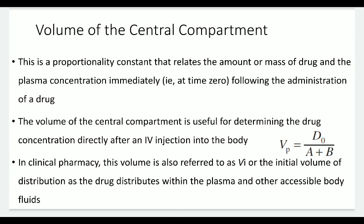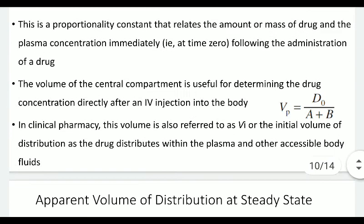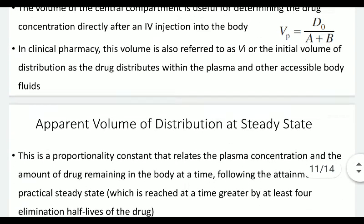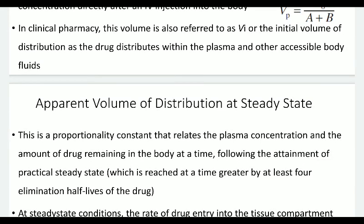Next is the volume of the central compartment. This is a proportionality constant that relates the mass of drug to the plasma concentration immediately at time zero following drug administration. The ideal time to calculate the volume of the central compartment is to find the drug concentration in blood immediately after administration. This volume is useful for determining drug concentration directly after an IV injection. In clinical pharmacy it is also referred to as VI, or the initial volume of distribution, as the drug distributes within the plasma and other accessible body fluids.